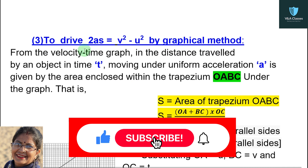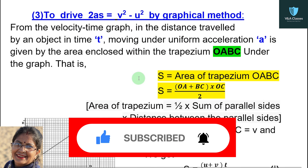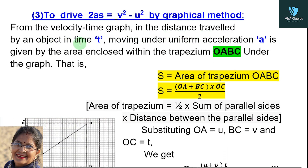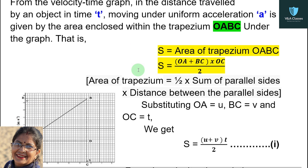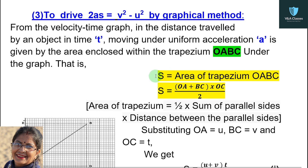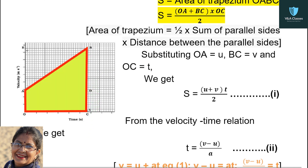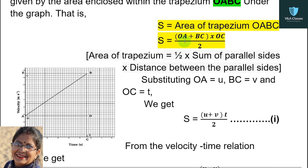Next, for the third equation: to derive 2as equals v squared minus u squared by graphical method. From the velocity-time graph, the distance traveled by an object in time T moving under uniform acceleration A is given by the area enclosed within the trapezium O, A, B, C under the graph — same as before. So S equals the area of trapezium O, A, B, C.